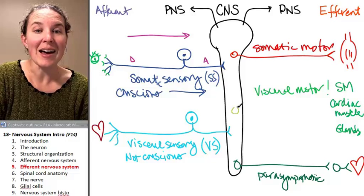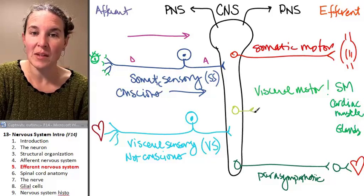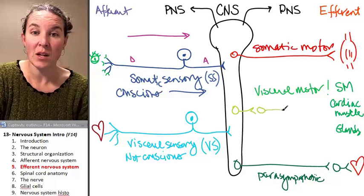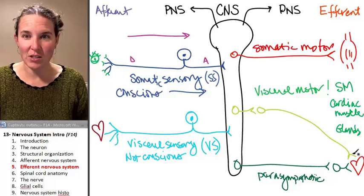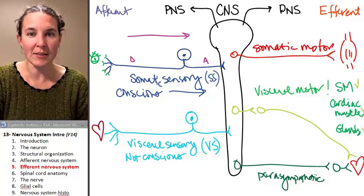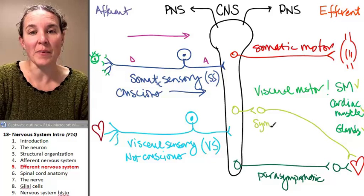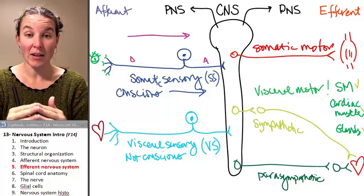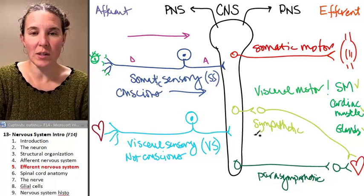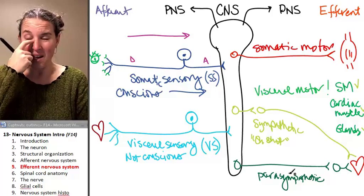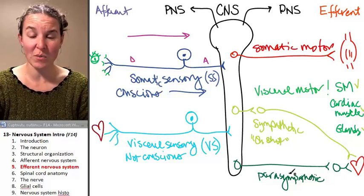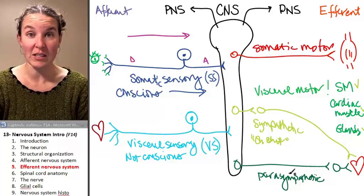The other option is sympathetic. It's also visceral motor with a two-neuron pathway, and it innervates the same effectors — smooth muscle, cardiac muscle, or glands — but this time it's a sympathetic pathway. A sympathetic pathway activates everything. This is the quintessential 'oh shit' response. If you have that response, that's your sympathetic nervous system activating.